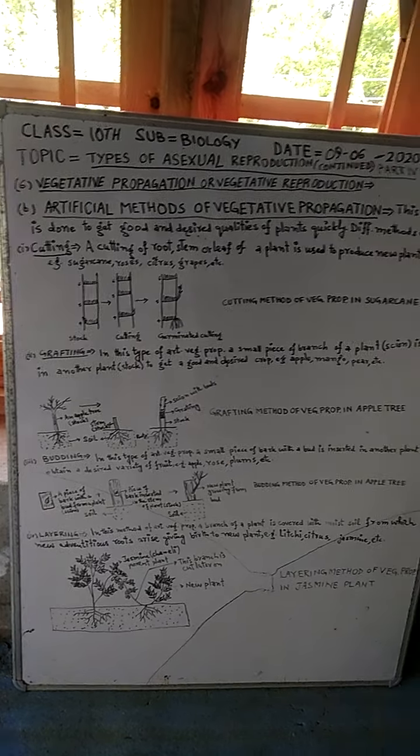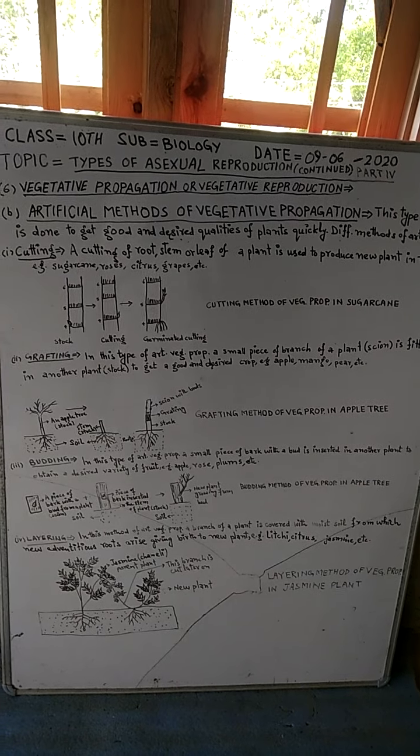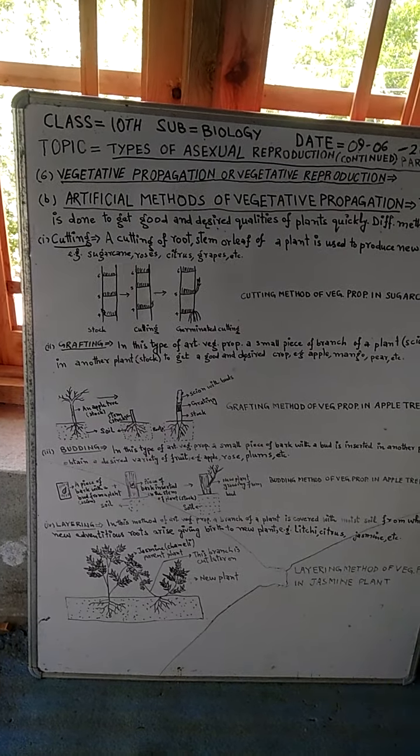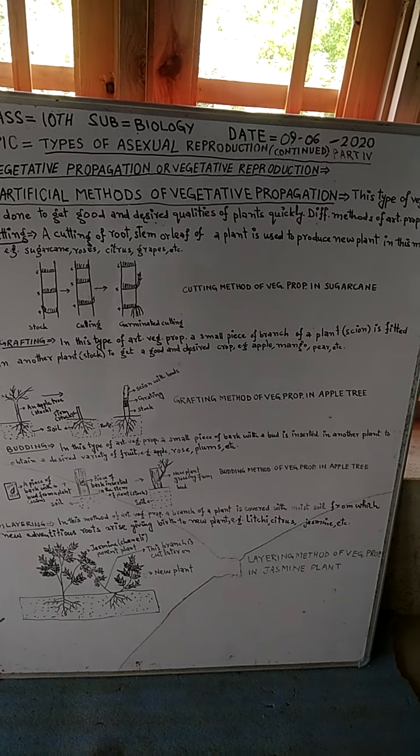Then second type or second method of vegetative propagation is grafting. In this type of artificial vegetative propagation,